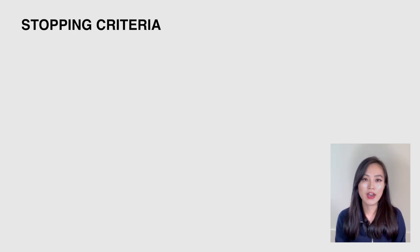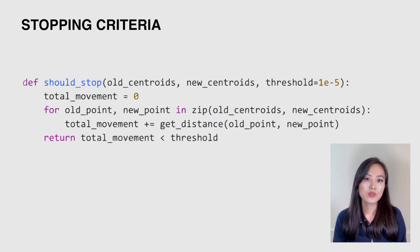Now we only have one step left, which is to define the stopping criteria to exit the loop. This should_stop function takes the old centroid and updated centroid and compute the total movements across all centroids. The function returns true if the total movement is less than a threshold. Here we use e to the power of negative 5 as a threshold. It's a very small number, and you could choose a different number depending on how small you want the movement to be.